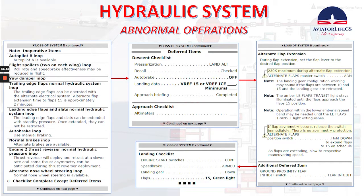Here is the list of inoperative items with loss of system B. Autopilot B inoperative but autopilot A is available. Flight spoilers — 2 on each wing inoperative; roll rate and speed brake effectiveness may be reduced in flight. Yaw damper inoperative. Trailing edge flaps normal hydraulic system inoperative — the trailing edge flaps can be operated with the alternate electrical system; alternate flap extension time to flaps 15 is approximately 2 minutes. Leading edge flaps and slats normal hydraulic system inoperative — they can be extended with standby pressure but once extended they cannot be retracted. Auto braking inoperative — use manual braking. Normal brakes inoperative — alternate brakes are available.